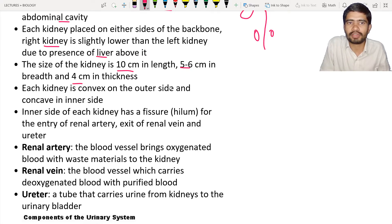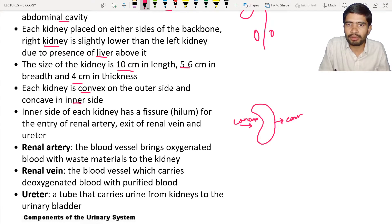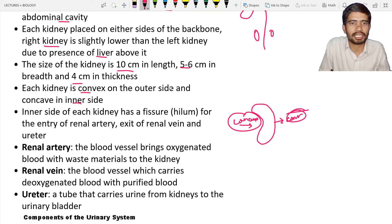The kidney's breadth is 5 to 6 centimeters and 4 centimeters in thickness. Each kidney has a convex shape on the outer side and a concave shape on the inner side. So we can see both convex and concave shapes in the kidney.